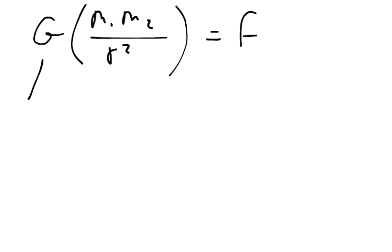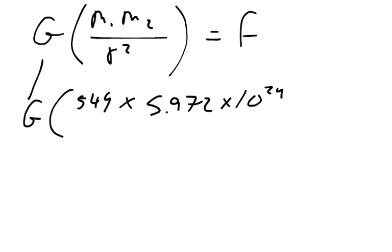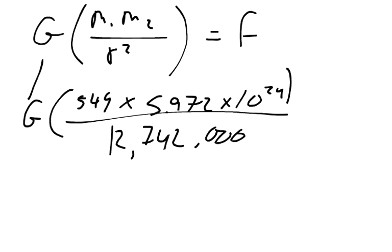And so G is again 6.673 times 10 to the negative 11th, and we're just going to continue to call it G for the time being. M1 was 549 kilograms. M2, the mass of the Earth, is 5.972 times 10 to the 24th.